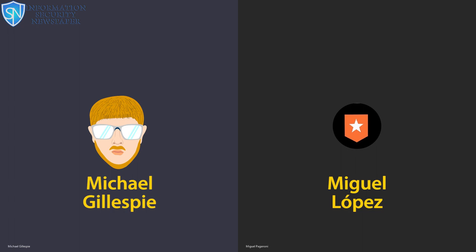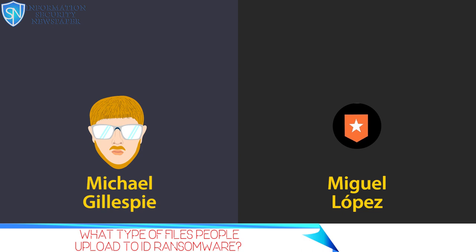What type of files can people upload on your ID Ransomware website? The site asks for the victim to upload an encrypted file — just any file. I recommend something not confidential, like a sample picture or something in the downloads folder. Upload any file that the ransomware encrypted along with one of the ransom notes.